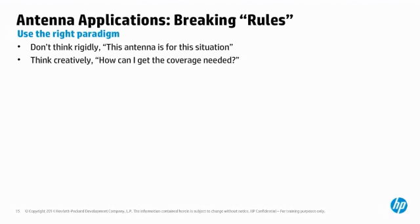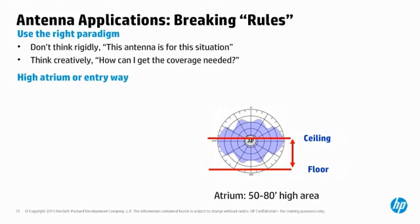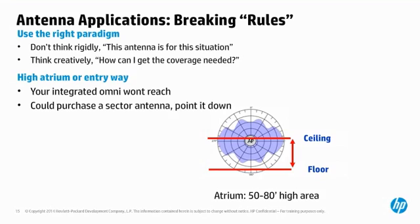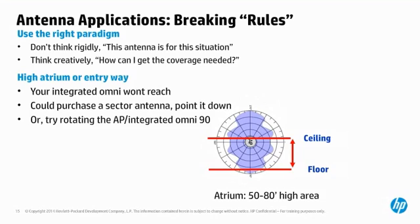You may run into a unique situation that requires a unique thinker. Don't think rigidly about which antenna should be used for which situation. Understand and reflect upon antenna coverage patterns and think: how can I get the coverage I need? For example, the entryway to an office building might have a large open atrium with very high ceilings. The APs you have all have integrated omni antennas and they don't reach the floor. A sector antenna seems perfect, but if you don't have one and you have a deadline, try installing one of your standard APs and rotate it 90 degrees from its normal orientation — maybe it will reach the floor and cover the area.